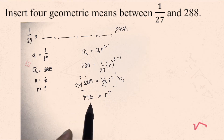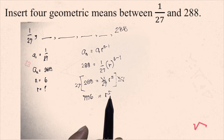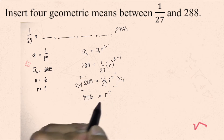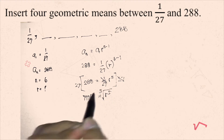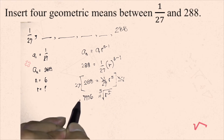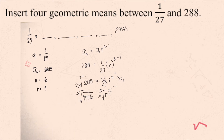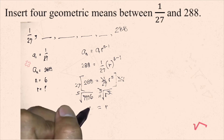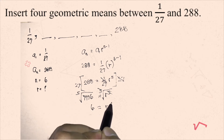To remove the exponent, we take the fifth root of both sides — since the term is raised to the fifth power, we apply the fifth root. So r equals the fifth root of 7,776, which equals 6. That is now the common ratio.